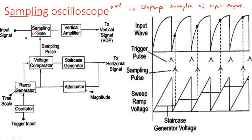The sampling gate selects samples of the input signal. This oscilloscope displays samples of the input signal, so a sampling gate is used here. You may have studied this concept in pulse and digital circuits (PDC). A sampling gate works like a gate — such as at a house, office, school, or college — where a watchman controls entry. The watchman here acts like a sampling pulse.